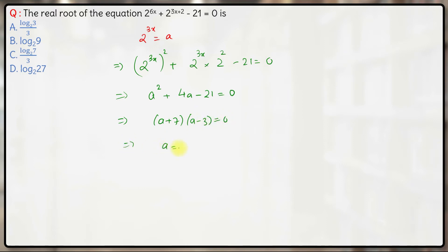So a will be equal to either plus 3 or minus 7. What is a? a is 2 raised to the power 3x. Now 2 raised to the power anything will always be greater than or equal to 0. This will always be positive, so we'll only accept the value 3 and the value of minus 7 will be rejected.